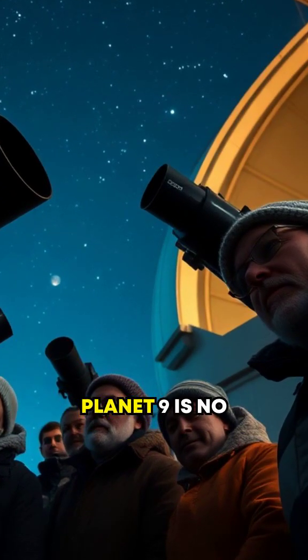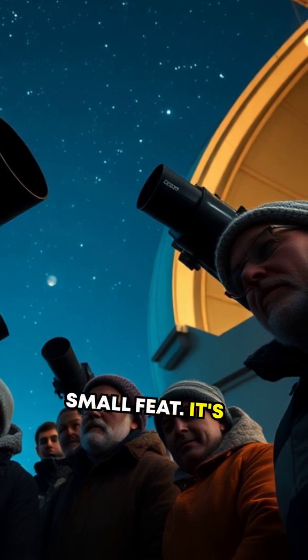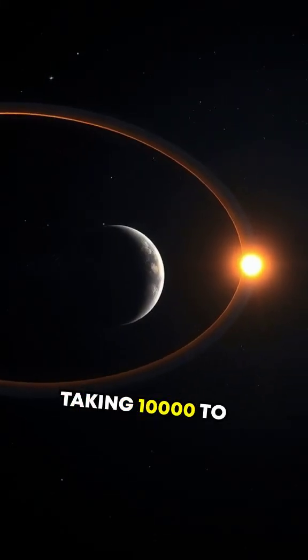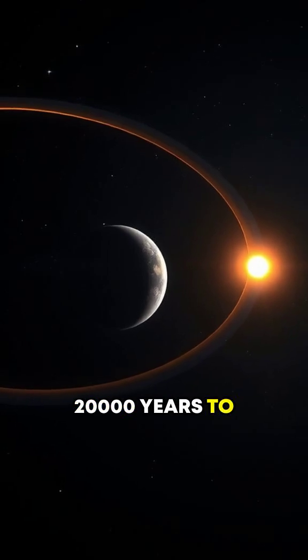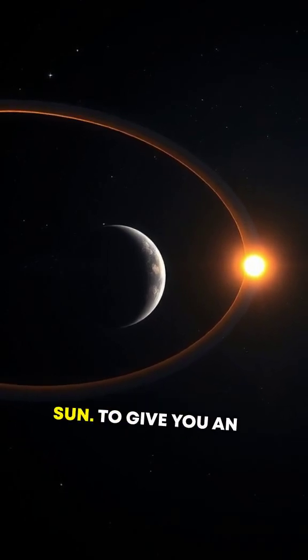But spotting Planet 9 is no small feat. It's incredibly far away, possibly taking 10,000 to 20,000 years to complete just one orbit around the Sun.